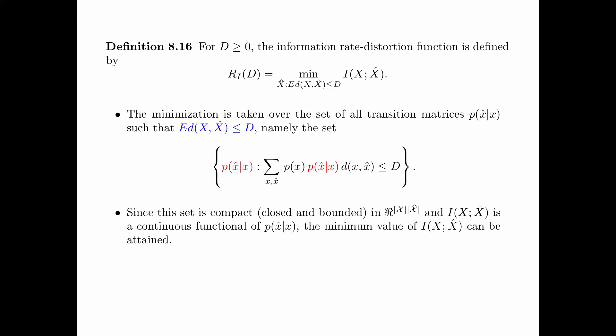Since this set is compact — that is, closed and bounded in the Euclidean space — and the mutual information between x and x-hat is a continuous functional of the transition matrix p(x-hat | x), the minimum value of I(x; x-hat) can be attained.